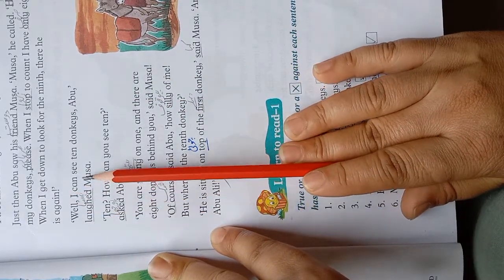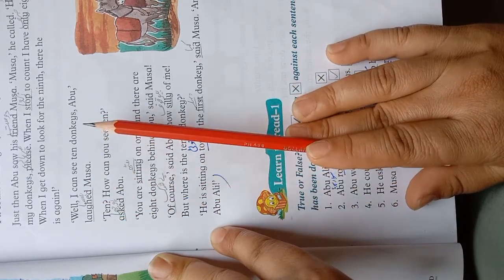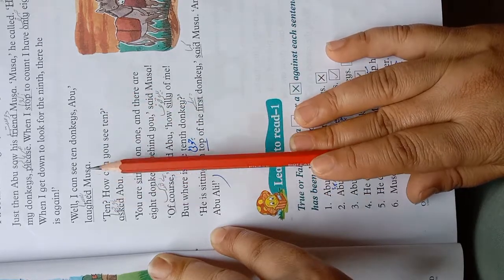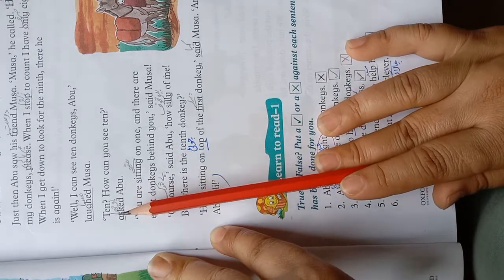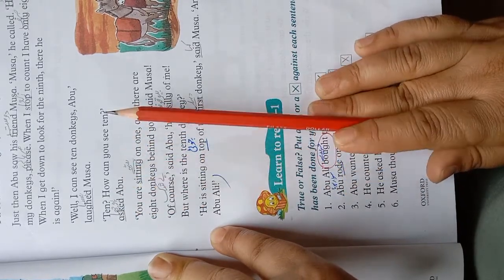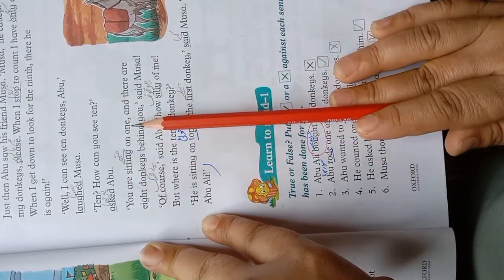Well, I can see ten donkeys. Main das gaddhe dekh sakta hoon. Abu laughed. Abu Musa par hansa. Laugh ka meaning hota hai hansna. Ten! How can you see ten? Aapne das kaise dekhe? Asked Abu.